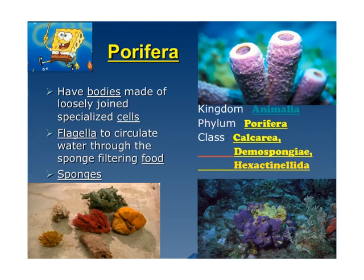Porifera are the sponges. They have bodies made of loosely joined specialized cells. They have flagella to circulate water through the sponge, filtering food. They're very primitive — they don't have digestive systems, nerves, or brains. They just sit there and as water and the material inside the water move through them, that feeds them. They are in the kingdom animalia and phylum porifera. These are the two that I need you to remember.